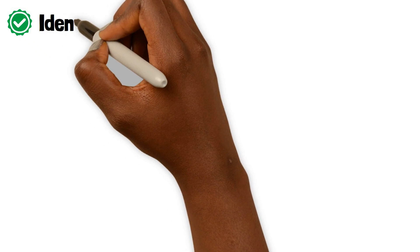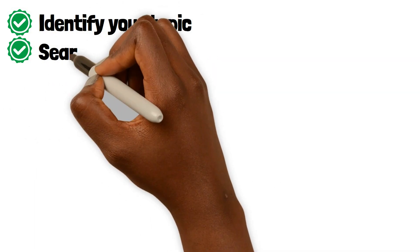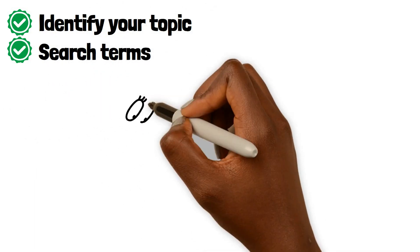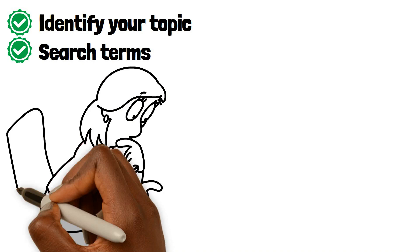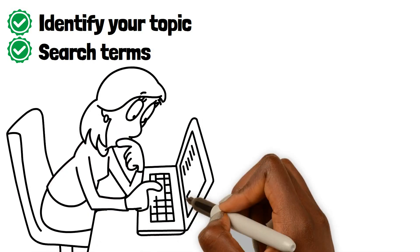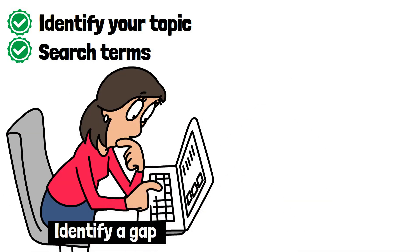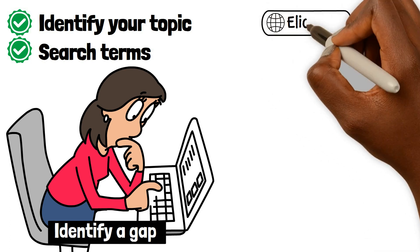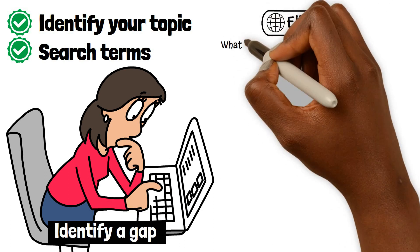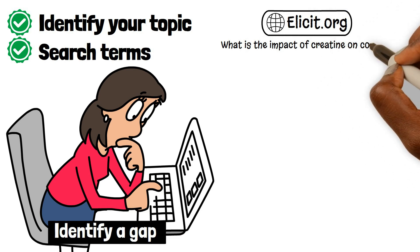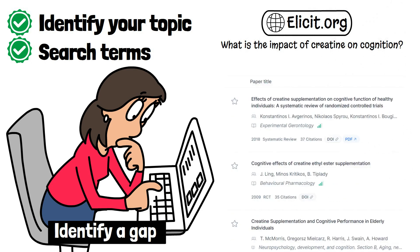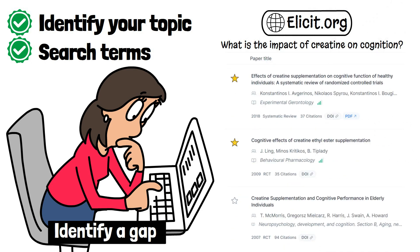The first step is to identify your topic and search terms. If you have a research question, use it as a search term. If not, that's fine — the purpose of a literature review is to identify a gap. Once you have your search terms, head over to Elicit.org to search for relevant articles. Star the papers that are relevant to your topic and export them.